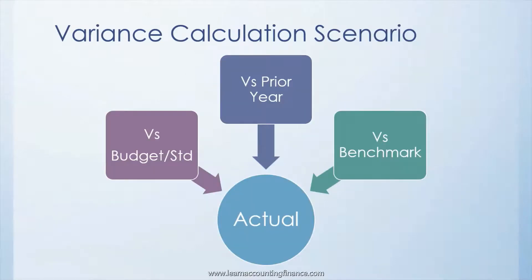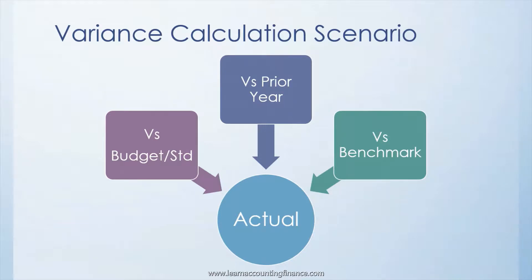Another important question is the variance calculation scenario — what are you actually trying to calculate the variance against? Most often you have actual results: actual sales, actual profit, and then you are comparing this with another reference point. You may be comparing actual results versus budget or standard, versus prior year, prior month, or prior week. You could also be comparing actual results versus a benchmark, which could be industry information or competitor data.